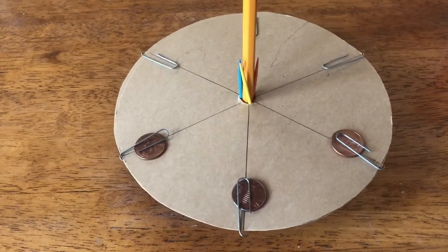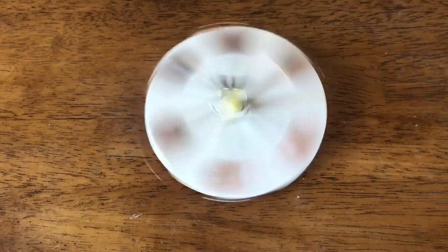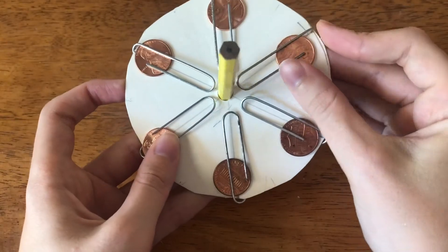Have the students try to make another top using different amounts of weights and different distances. They shouldn't worry about making it better than this top. They're just showing how different variables affect a top spin.